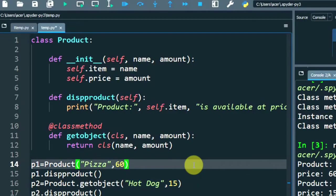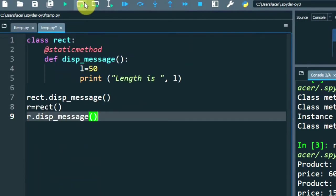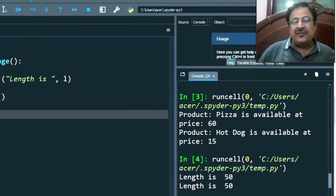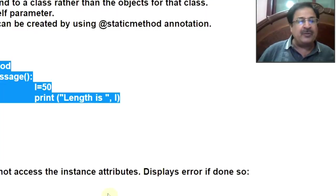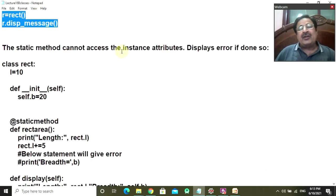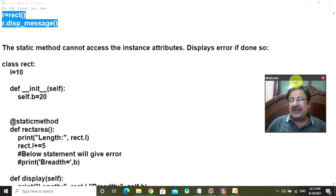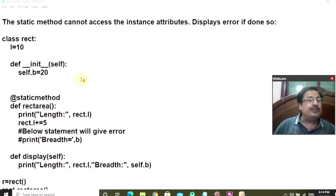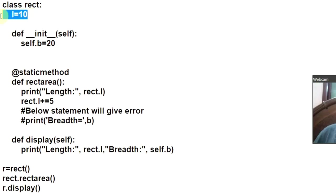Now I want to tell you that a static method cannot access the instance attribute, and if it tries, you get an error. Let us see how. The class Rect has a class attribute, length is 10. Accessing a class attribute is not a problem — neither through the static method nor through the class method. But accessing an instance variable through a static method or class method will get you an error.